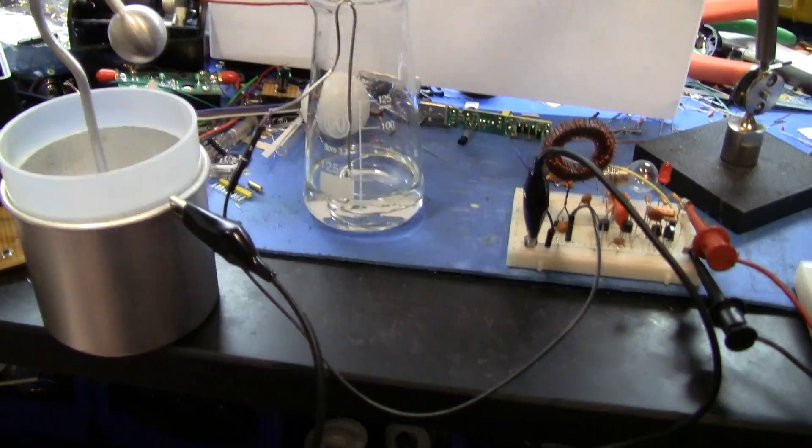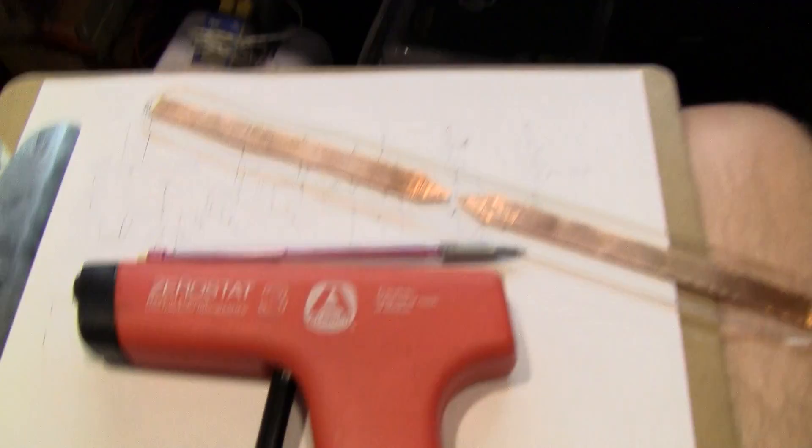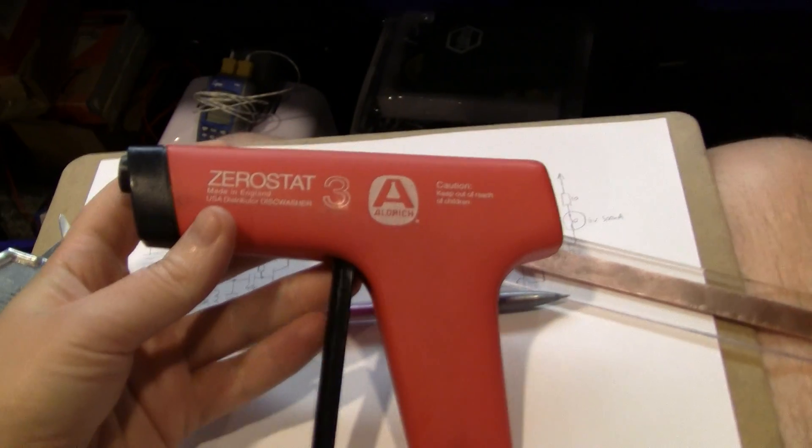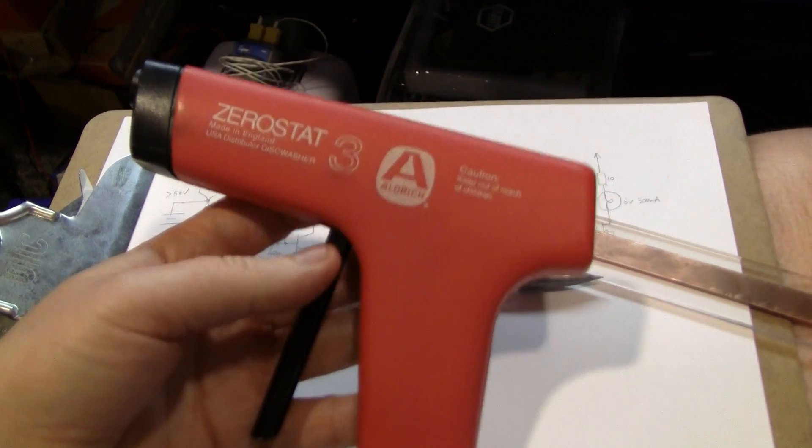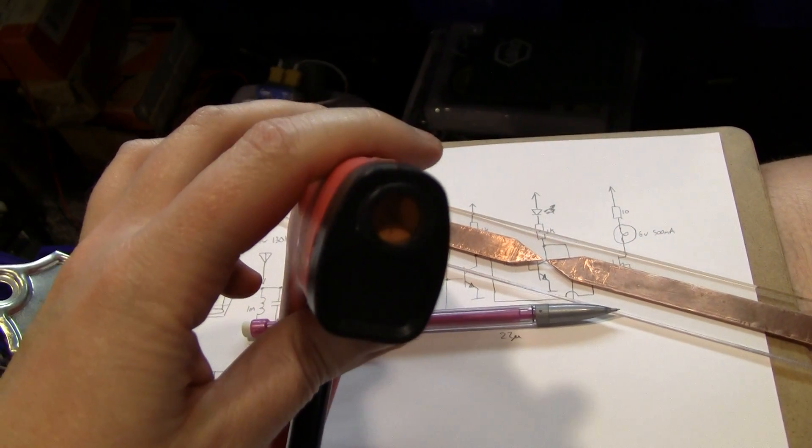So the electrostatic system is pretty straightforward. It's charged up using one of these things. This is a zero stat gun. Basically it's got a piezoelectric generator in there and a needle so it can spray charge off it.